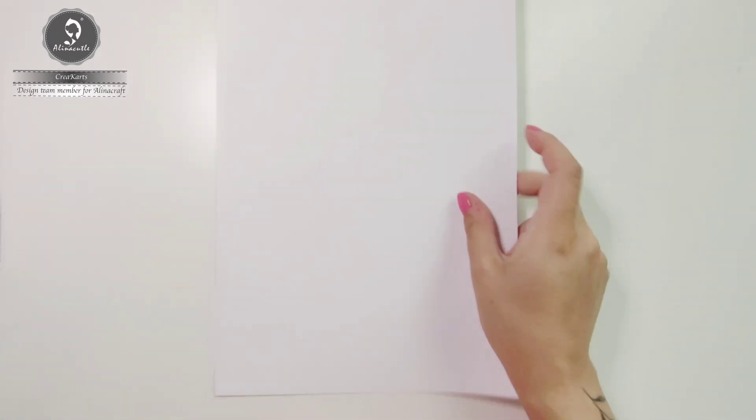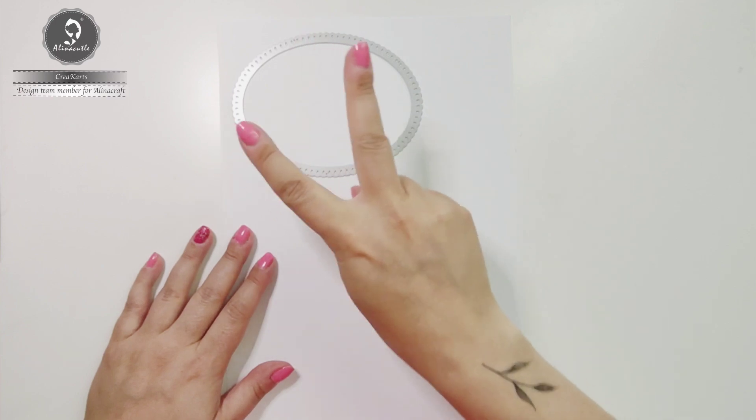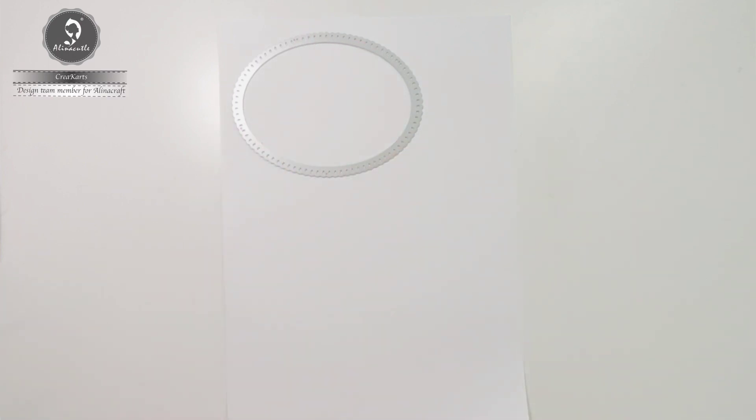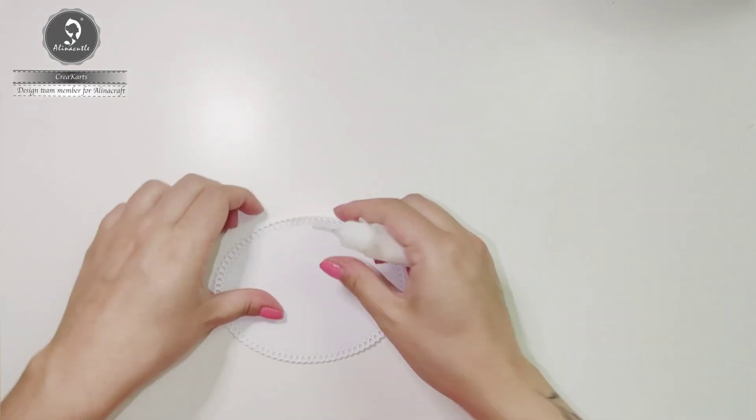First I'm going to make the base of this card. I'm going to use a white cardstock and the biggest die of the set and cut it out twice. I'm going to glue the edges together.